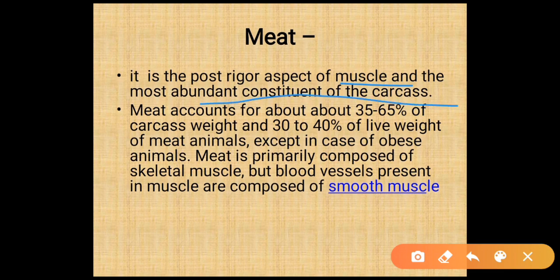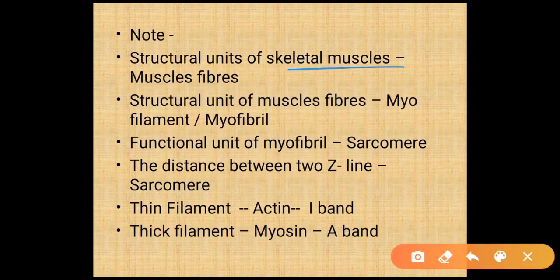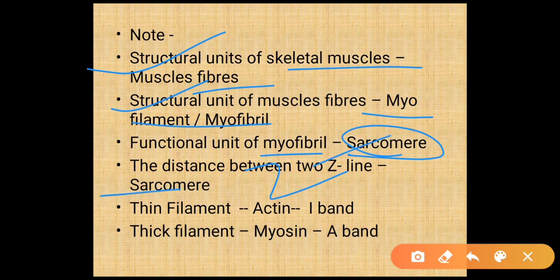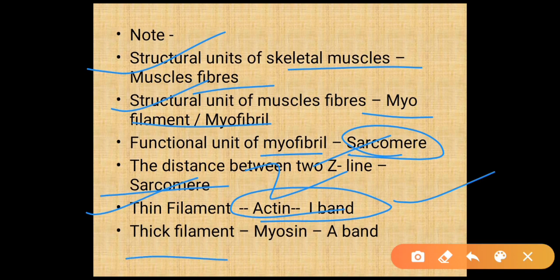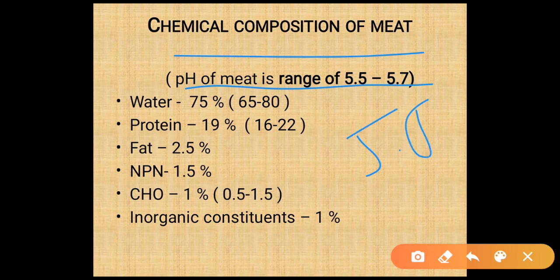Meat is a post-rigor aspect of muscles and the most abundant constituent of the carcass. It contains about 35 to 65% of the carcass weight and 30 to 40% of the live weight of the meat animal. Meat is primarily composed of skeletal muscle, but blood vessels present in the muscle are composed of smooth muscle. The structural unit of skeletal muscle is the muscle fiber. The structural unit of muscle fiber is a myofilament or myofibril. The functional unit of myofibril is the sarcomere — the distance between two Z-lines. Thin filament is actin (I-band) and thick filament is myosin (A-band).